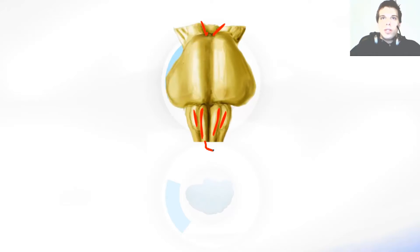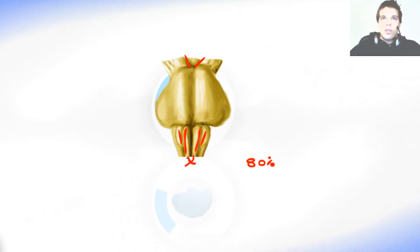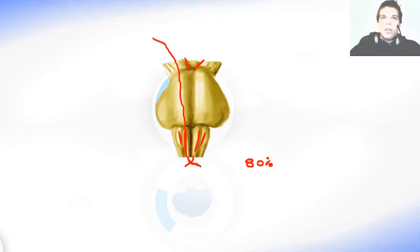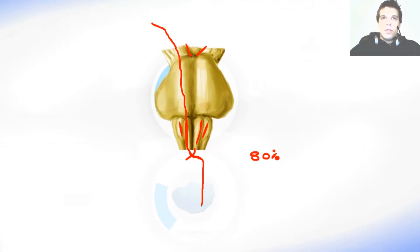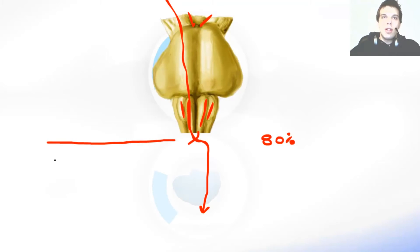Somewhere over here is the decussation of pyramids. It is the place where almost 80% of motor fibers in the pyramids cross. So we have the fibers coming from the brain, going to the pyramids, and at the decussation of pyramids they cross. When they cross the midline, they continue down as the lateral corticospinal fasciculus. This is a very important place, because this is where the spinal cord begins and the medulla oblongata ends.